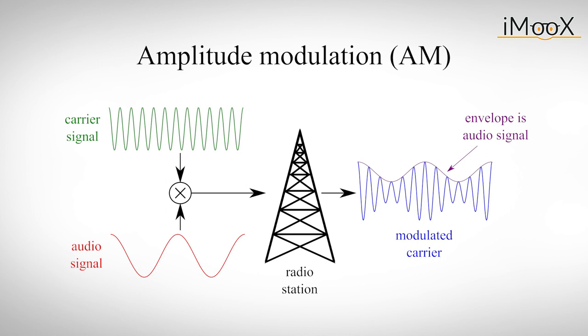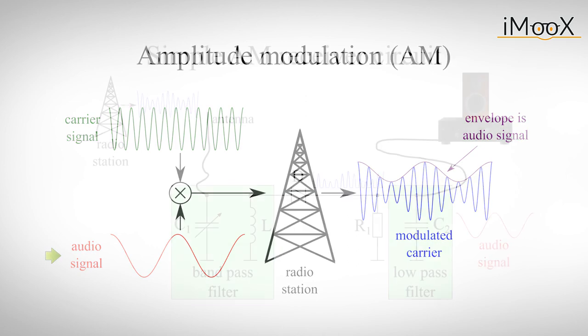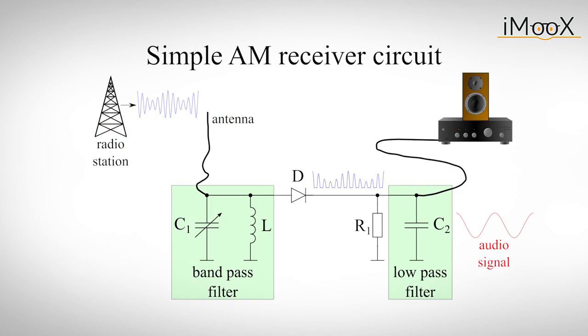Amplitude modulation, or AM, is a yesteryears way to transmit a radio signal. Even though it's outdated, you can still receive AM radio in most parts of the world because its principle is so easy. The radio station transmits a carrier signal with a frequency somewhere between a few hundred and some thousand kilohertz. The carrier signal is modulated in amplitude with the waveform of the audio signal.